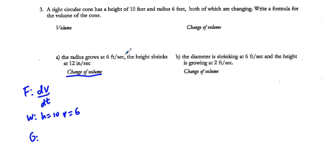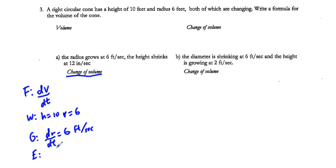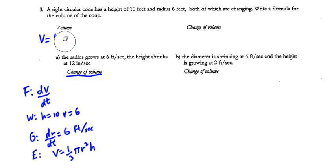The problem gives us two different things: the radius grows at 6 feet per second and the height shrinks at 12 feet per second. So dR/dt = 6 per second. Our equation is V = (1/3)πr²h.